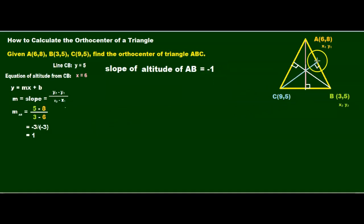So, the slope is the negative reciprocal of AB, which gives us negative 1. To find the equation of our altitude, we need to take one of these points. We're going to take either (6,8) or (3,5). I'm just going to use (3,5).